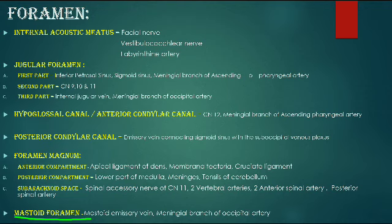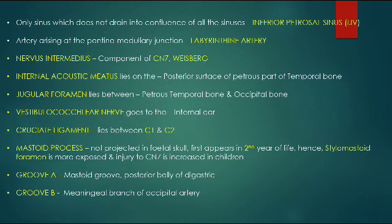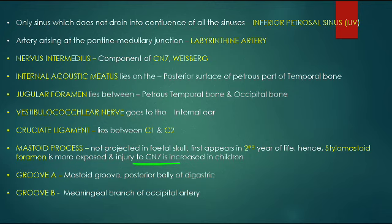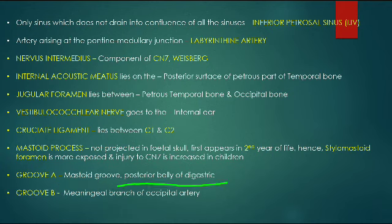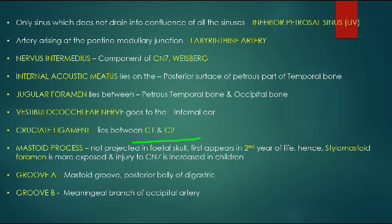The mastoid foramen transmits the mastoid emissary vein and the meningeal branch of the occipital artery. The mastoid process is not projected in the fetal skull, first appearing in the second year of life; the stylomastoid foramen is therefore more exposed, increasing the risk of injury to CN VII in children. Groove A (the mastoid groove) gives attachment to the posterior belly of the digastric muscle - a very important question.